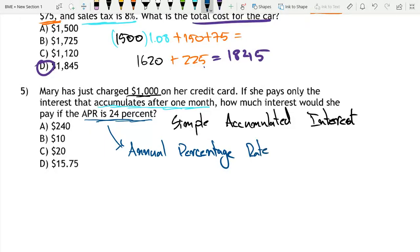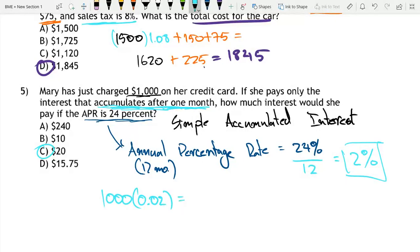Anyways, back to this. Annual percentage rate is equal to 24%. But this is over 12 months. We are only paying the interest that accumulates after one month. So this would mean that we'd have to divide this by 12. That would mean that our monthly interest rate is 2%. And she only is paying the interest that accumulates after one month. So she's only paying 2% on this $1,000 charge, which means that she is paying $20. Because 1,000 times 0.02 equals 20.